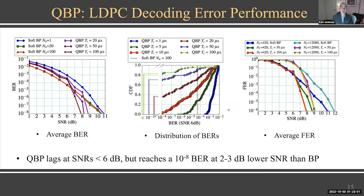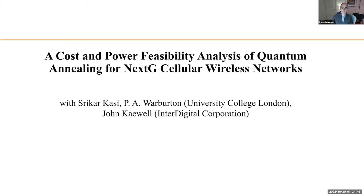Here are the performance results. Looking at the best possible belief propagation decoder — the red curve — even up to 100 iterations, which is extremely charitable to belief propagation, Shrikar's quantum belief propagation scheme achieves a lower bit error rate at slightly higher signal-to-noise ratios. Cellular networks often operate within 3 to 10 decibels of SNR, which is a practical operation point.